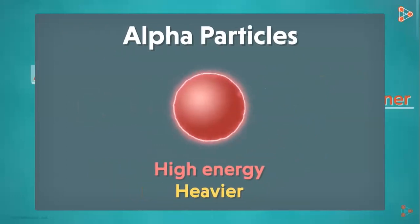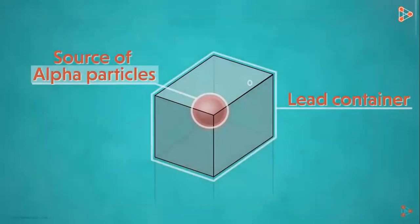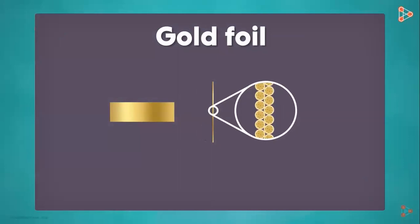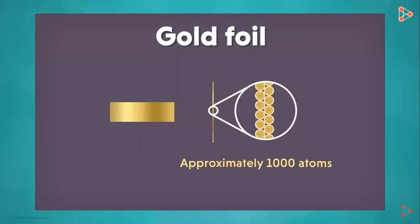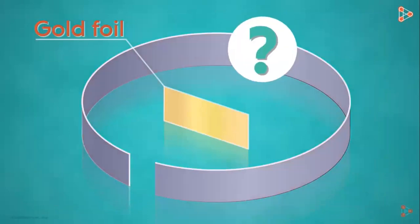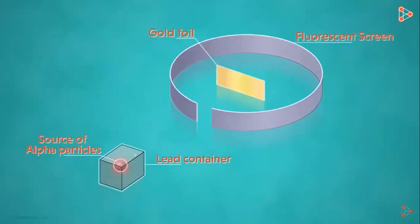Their greater mass and energy compared to the protons made Rutherford choose alpha particles for the experiment. He used a very thin gold foil on which the alpha particles would bombard. A really thin gold foil was estimated to contain approximately 1000 atoms — fewer atoms make the experiment more convenient. Lastly, there is a circular fluorescent screen that would help detect radiation; the screen glows whenever alpha particles hit it, allowing the track of alpha particles to be traced.